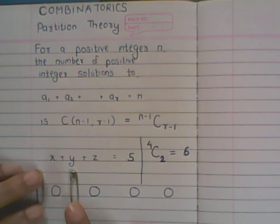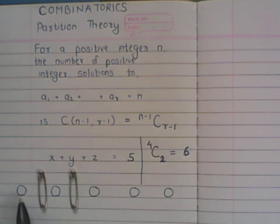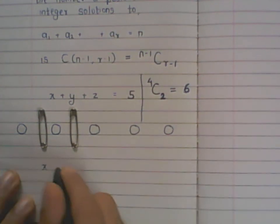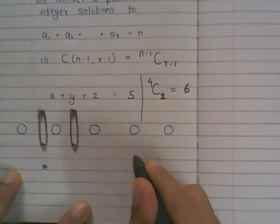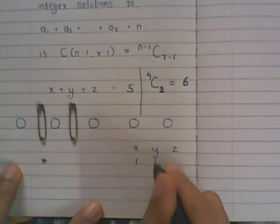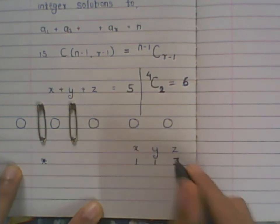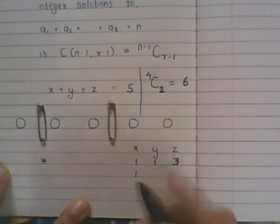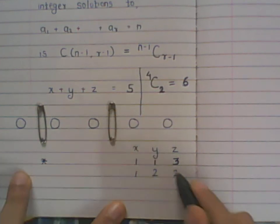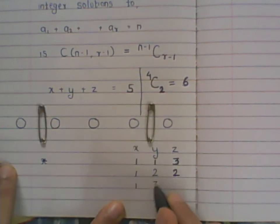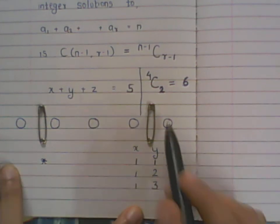Listing the possibilities — x, y, z: placing the partitions to give the first child one ball, the second one ball, and the third three balls gives (1,1,3). Shifting the partition gives the first child one, the second two, and the third two — so (1,2,2). Shifting again gives the first child one, the second three, and the third one — so (1,3,1).